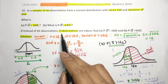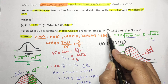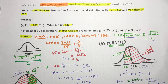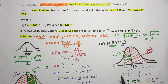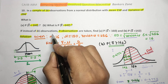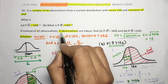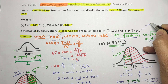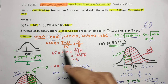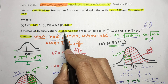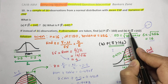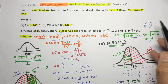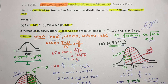Next, instead of 16 observations, if 9 observations are taken, you have to find the probability that the mean lies below 160 and the mean lies more than 142. The process is the same — just replace n equals 16 with n equals 9, repeat the process to find parts A and B, and comment your answer in the comment box. This is the homework for you.